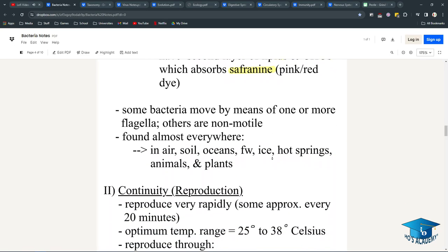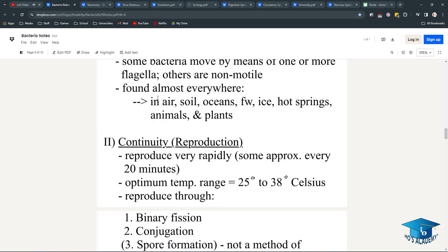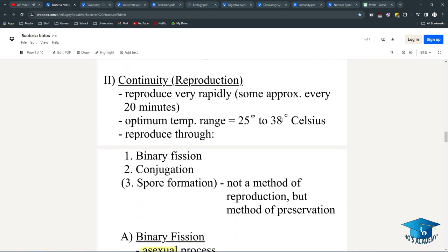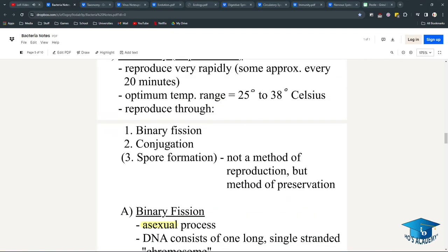Some bacteria can achieve locomotion through the flagella, and others don't even move at all. They're found almost anywhere. Regarding reproduction, some reproduce very rapidly, like even as fast as once every 20 minutes, meaning they double every 20 minutes. They have an optimum temperature range of 25 to 38 degrees Celsius.